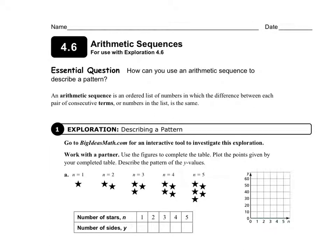We've been learning about linear patterns and linear functions, and now we're going to talk about something called arithmetic sequences, which are related because they give us a pattern that's very similar to a linear pattern. An arithmetic sequence is an ordered list of numbers where the difference between each consecutive pair is the same, or constant. The difference between them is constant — that's the key.